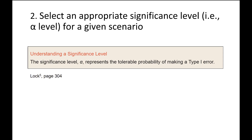A type 1 error is rejecting the null hypothesis when the null hypothesis is true. So if the null hypothesis is true, the alpha level is the proportion of tests for which we would reject the null and make a type 1 error. The alpha level is the highest p-value for which we would reject the null. This cutoff should be set before you collect any data. By default, this is set at 0.05, meaning if the null is true, we would still reject 5% of the time.